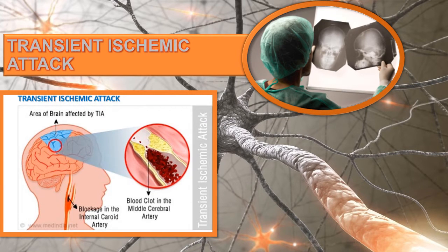Let's now review transient ischemic attacks, or TIAs. A reversible ischemic neurological deficit may be a warning sign of an impending ischemic stroke. Both warning signs cause transient focal neurological dysfunction resulting in a brief interruption in cerebral blood flow from cerebral vessel spasms or arterial hypertension. A TIA lasts a few minutes to less than 24 hours, and a reversible ischemic neurological deficit lasts a little longer than a TIA.